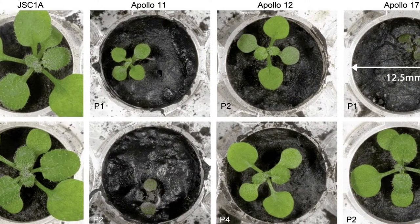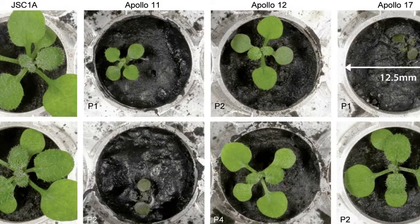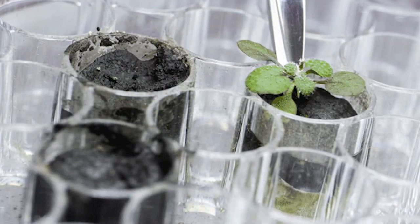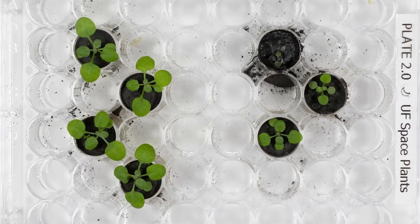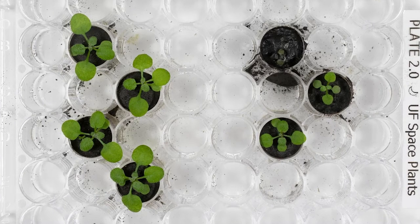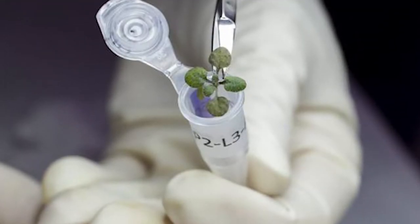Even then, the plants grew better in the Apollo 12 sample, which was younger, and the Apollo 17 sample, which was older. Plants growing in lab-created volcanic ash grew significantly faster and larger than those grown in lunar soils.